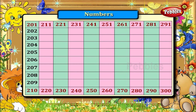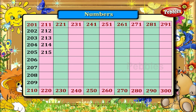Now find out the numbers between 211 and 220. They are 212, 213, 214, 215, 216, 217, 218 and 219.